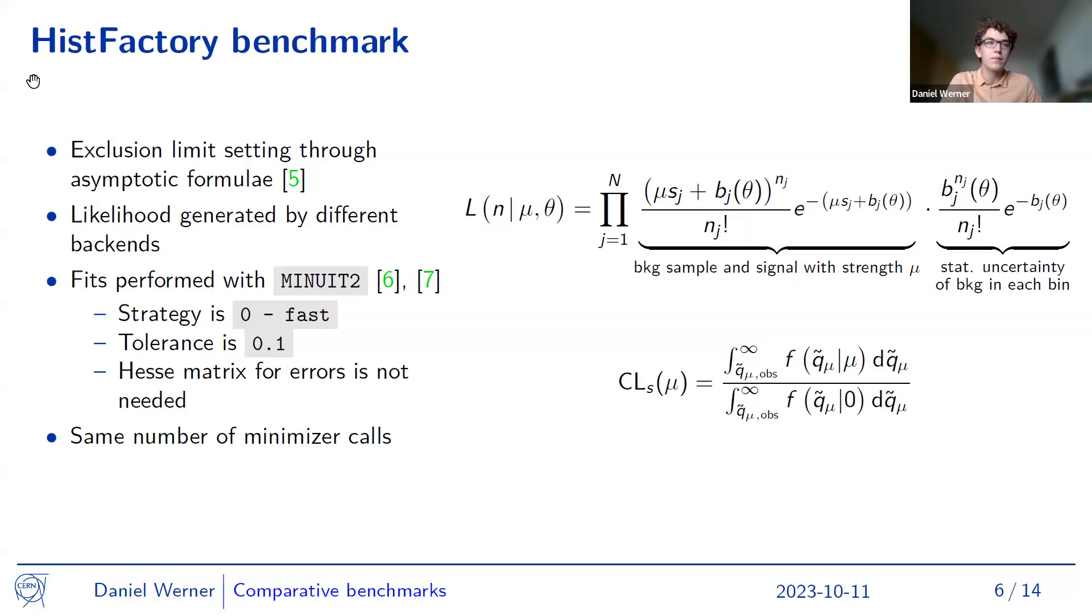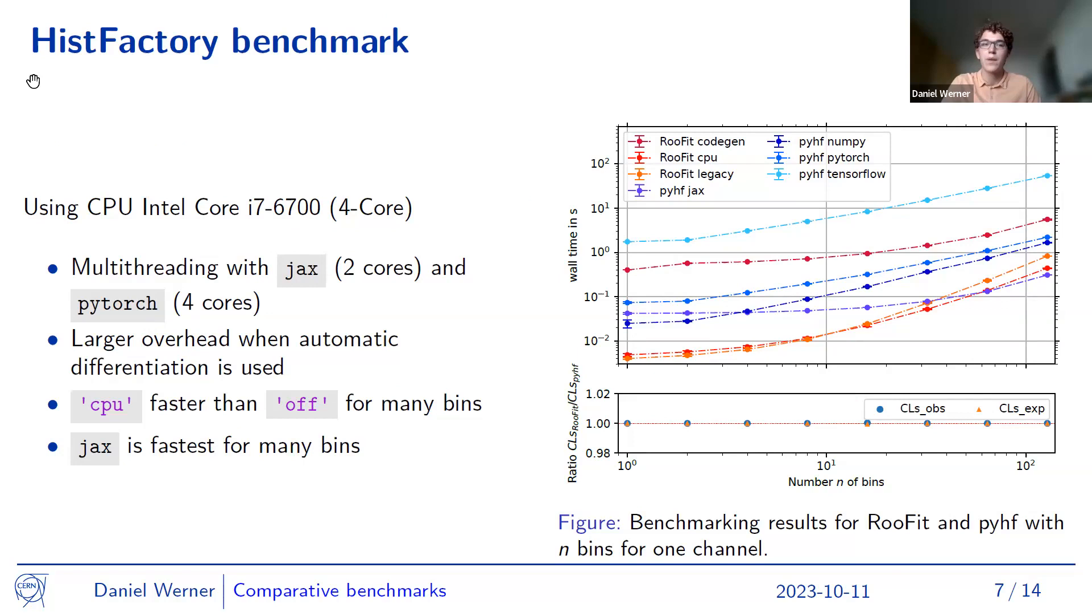So now here we see the first benchmark. This benchmark was run on an Intel Core i7-6700 CPU. It had four cores that were only used in multi-threading by PyTorch and JAX. The other backends didn't use any multi-threading. And the quantity that I varied in this benchmark is the number of bins in my histogram. So we see for especially for few bins, the backends with automatic differentiation are the slowest. So we see all the machine learning frameworks as backends and we also see codegen have a large overhead. And we see that especially RooFit CPU and the legacy backend are the fastest for few bins.